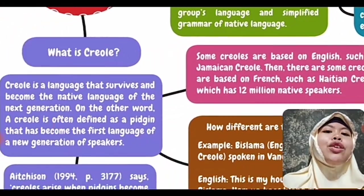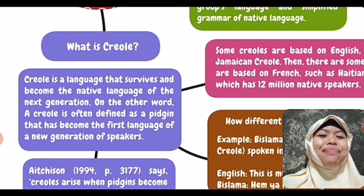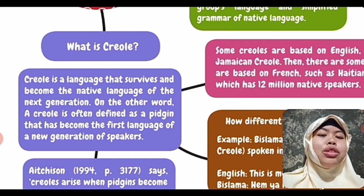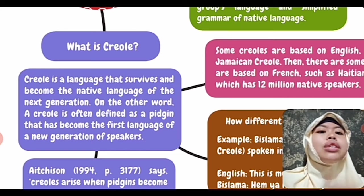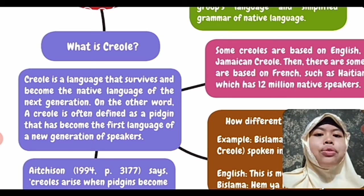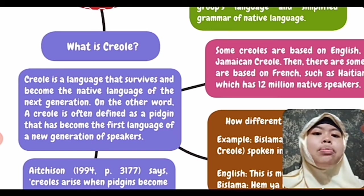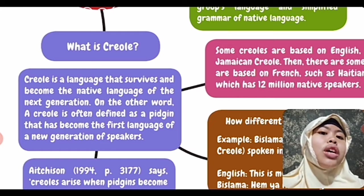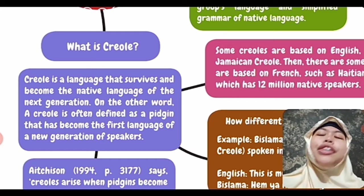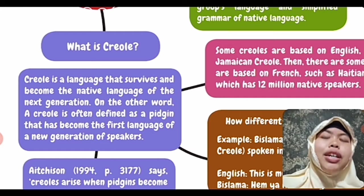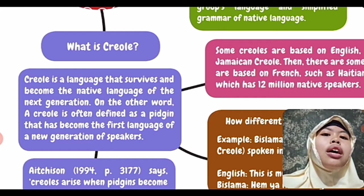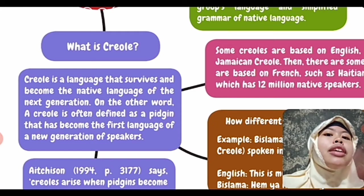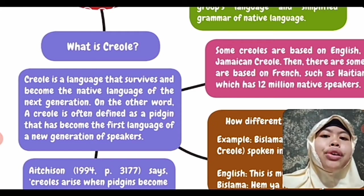Next, we go to Creole. What is Creole? Creole is a language that survives and becomes the native language of the next generation. In other words, Creole is often defined as a Pidgin that has become the first language of a new generation of speakers. Creole is a Pidgin that survives and then the children of the people who use Pidgin adopt the Pidgin as their first language — so it becomes Creole.